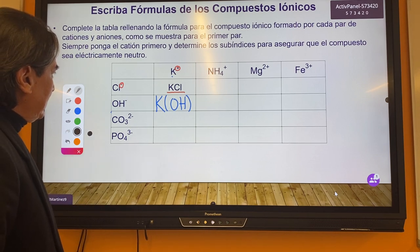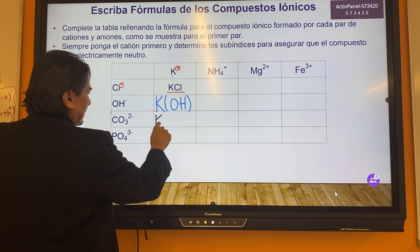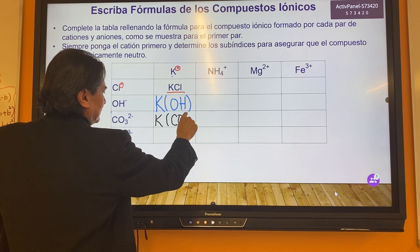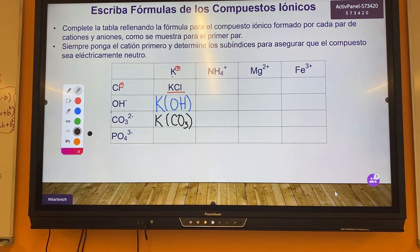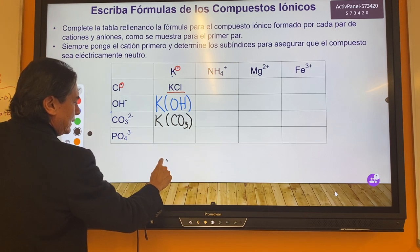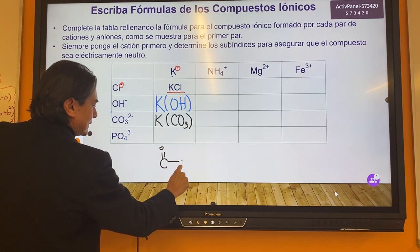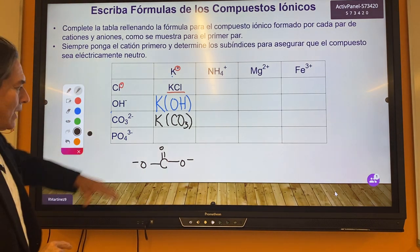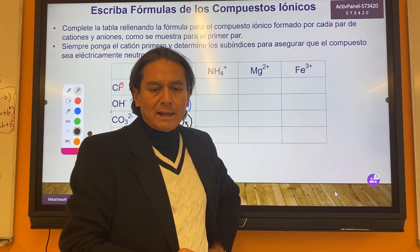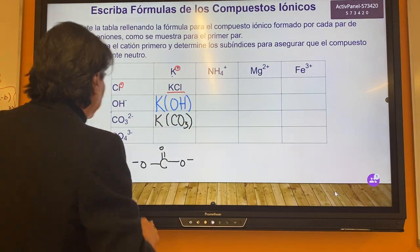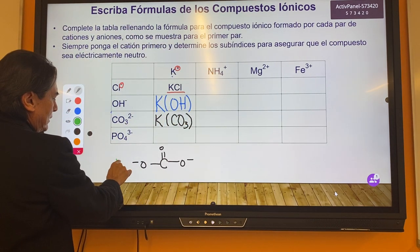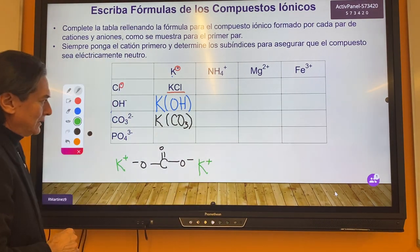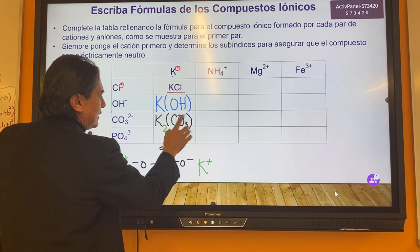Let's try combining potassium with the carbonate. The carbonate is an interesting compound — you ask yourself how many potassium ions or cations will you need to make a neutral compound. You can see there's a negative charge here, so you put one potassium there and one potassium here, so you're going to need two potassiums for every carbonate.